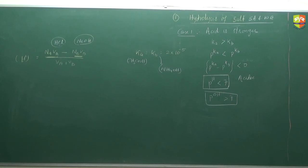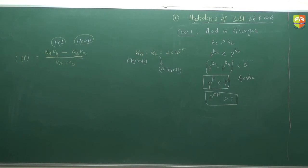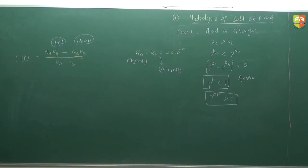The last one is weak acid and weak base, and the answer is 7. So the fourth one is also 7.